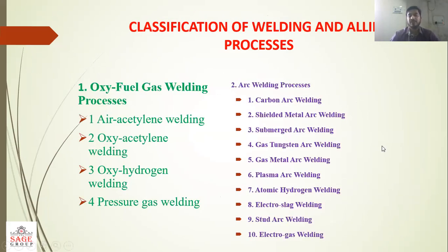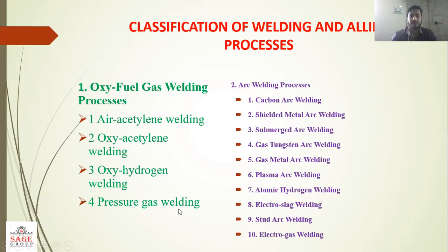Now the classification of welding processes. First, according to oxy-fuel gas welding: oxy-fuel gas welding is again classified into four types — air acetylene welding, oxy-acetylene welding, oxy-hydrogen welding, and pressure gas welding.